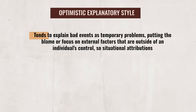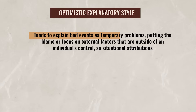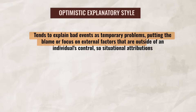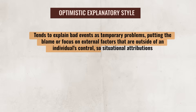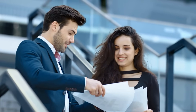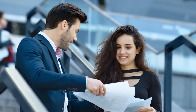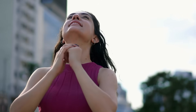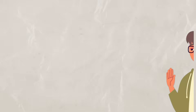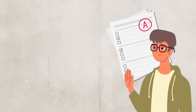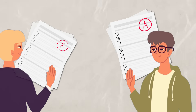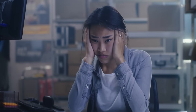An optimistic explanatory style tends to explain bad events as temporary problems, putting the blame or focus on external factors that are outside of an individual's control — so situational attributions. If events are good, a person with an optimistic explanatory style will tend to credit the positive outcomes to their dispositional attributes, focusing on internal factors. For example, if an optimistic student gets a high grade on a test, they may attribute it to how they studied. And if they got a poor grade, they may say that the test was unusually difficult or that they weren't feeling well that day.